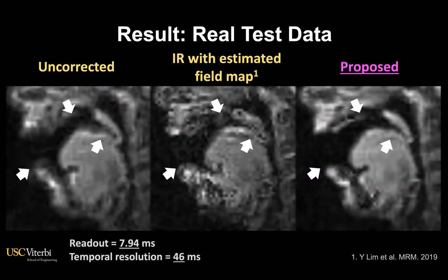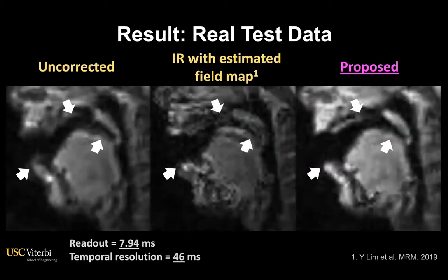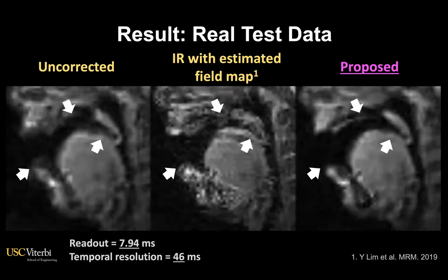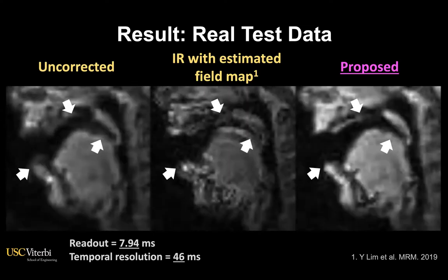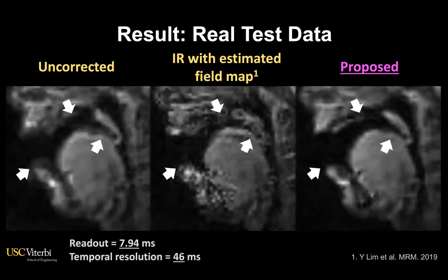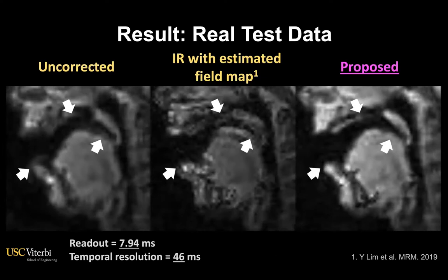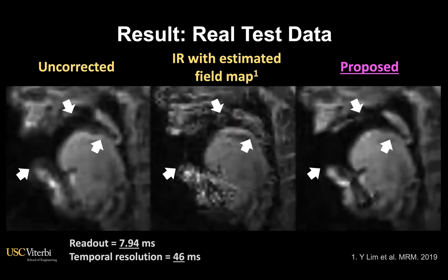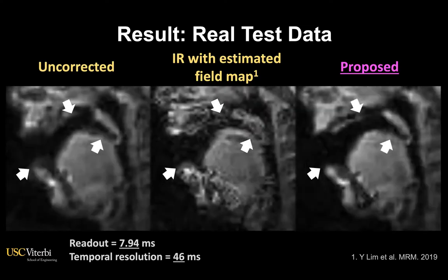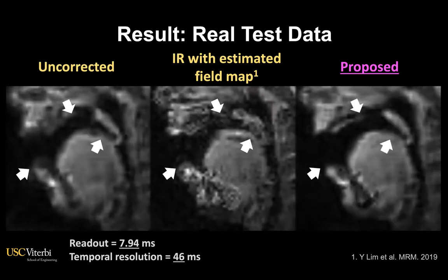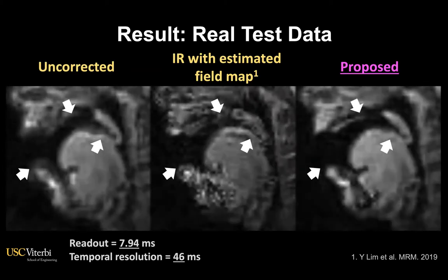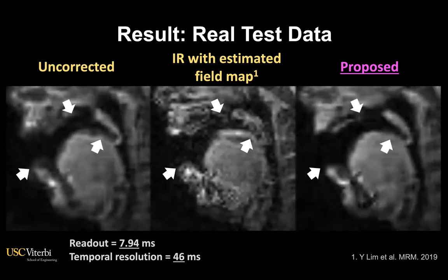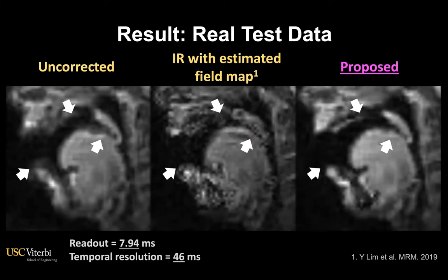We then applied the existing and proposed methods to real test data where the blurring is much more severe but the ground truth field map is not available. The proposed method still provides improved delineation of the boundary, whereas the previous method does not.